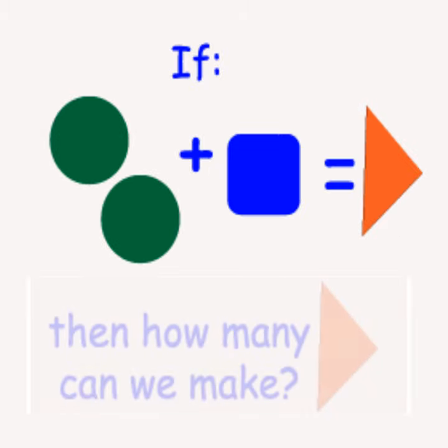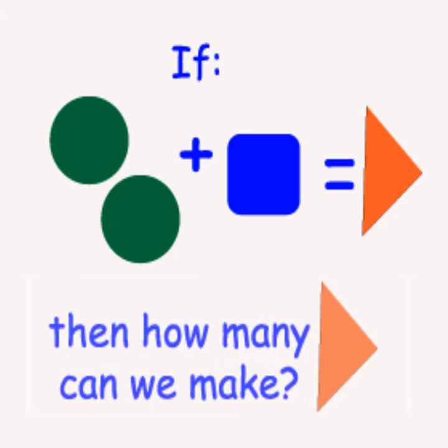If it takes two green circles and one blue square to make an orange triangle, then how many orange triangles can we make?